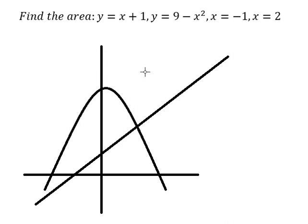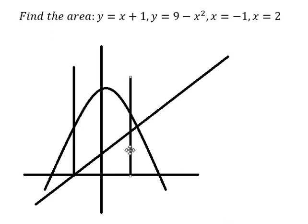They want to find the value between s equals negative one and s equals two. So the bounds should be like this, and in this situation we know that the region they want to find is this one.